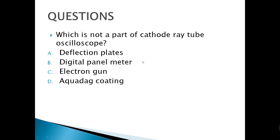Which is not part of a cathode ray tube oscilloscope? Since an oscilloscope is analog, the correct answer — the one that is not a part — is the digital panel meter.